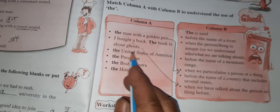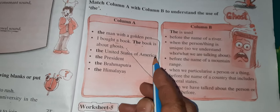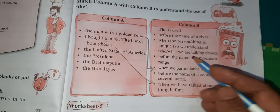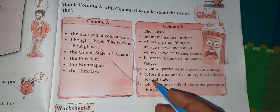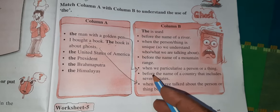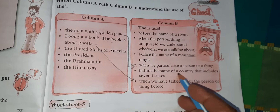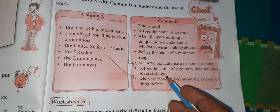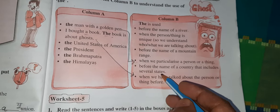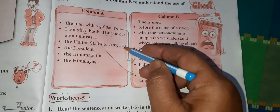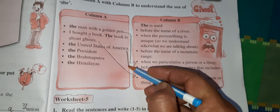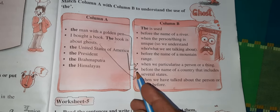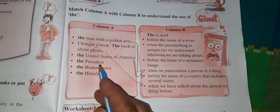The United States of America. Ismein aapka point given hai — before the name of a country that includes several states. Bohut saari states ko mila ke ek country ka naam hai. The United States of America — iske saath aap match karo ge.